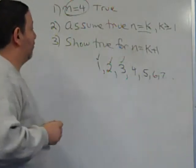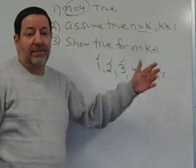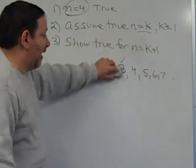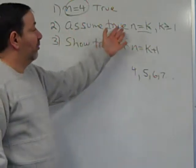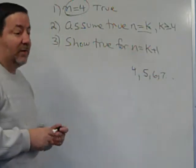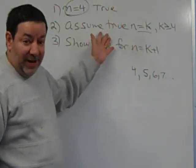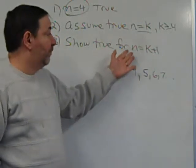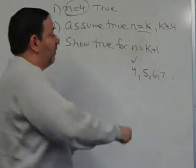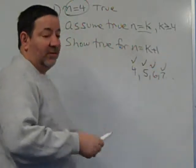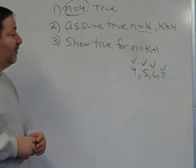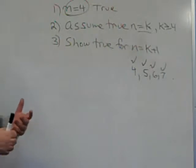A statement might be true for n equals 4 and above — that is, for 4, 5, 6, 7, 8, 9, 10, and so on forever. So you show it's true for 4, assume it's true for k where k is at least 4, and then show that if it's true for k (4 or above), then it is true for the next integer. So if it's true for 4, which step 1 verified, then it's true for 5, 6, 7, 8, 9, 10, and so on forever.